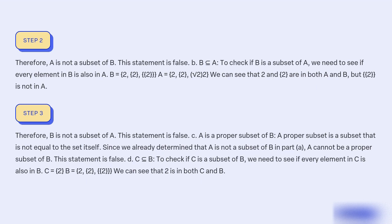A proper subset is a subset that is not equal to the set itself. Since we already determined that A is not a subset of B in part A, A cannot be a proper subset of B. This statement is false.